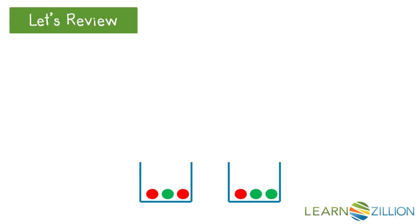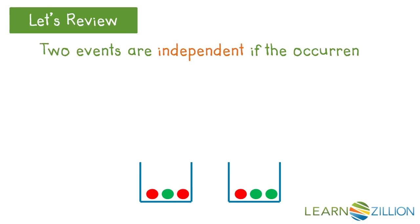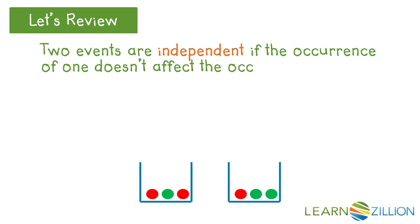Let's review. Two events are independent if the occurrence of one does not affect the occurrence of the other.